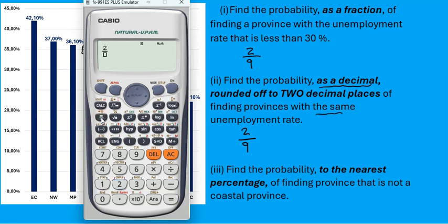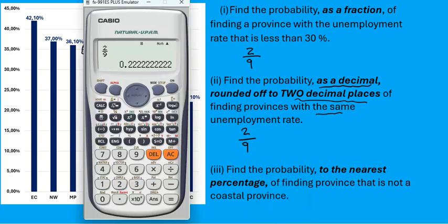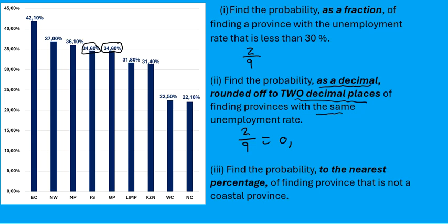We have to write it as a decimal, so we go to our calculator. It would be two divided by nine. To get the decimal, use the S2D button, and those decimals must be rounded off to two decimal places. The answer is 0.22.